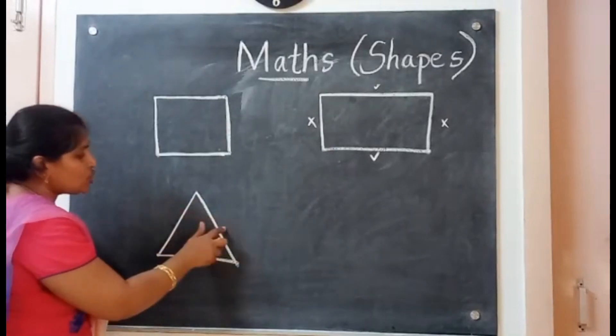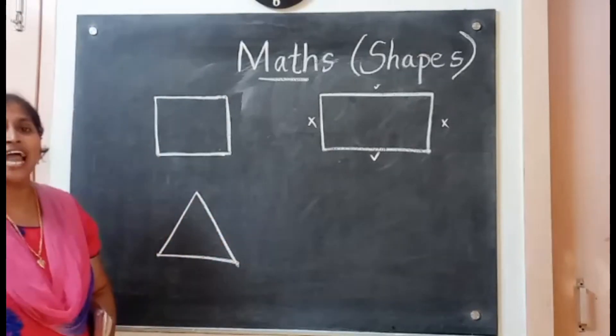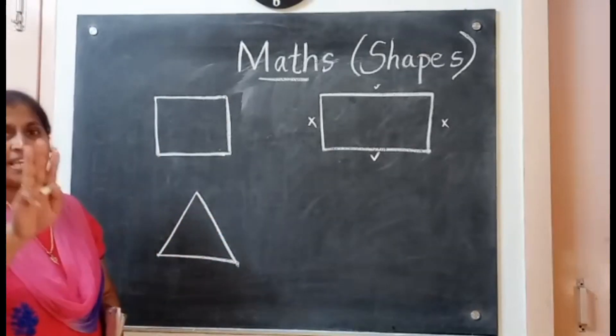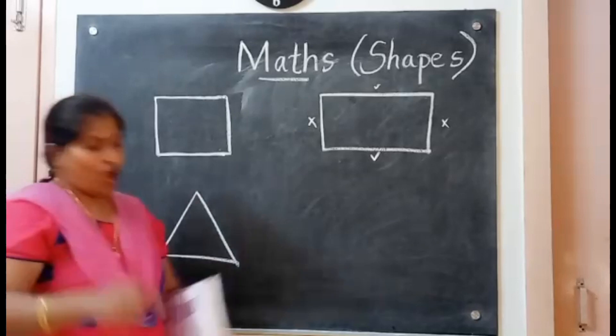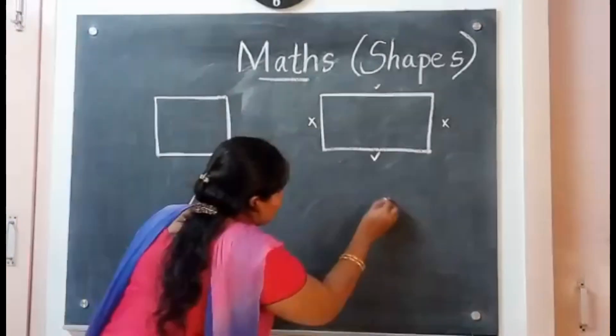Next, what shape is this? Yes — triangle! Triangle has three sides: one, two, three. Triangle has three sides.